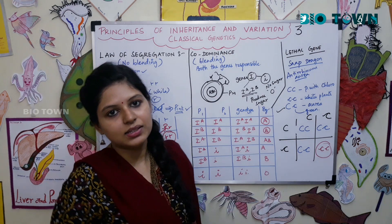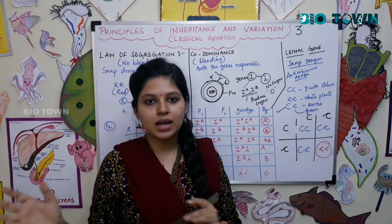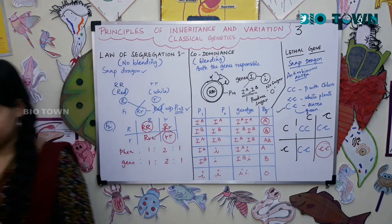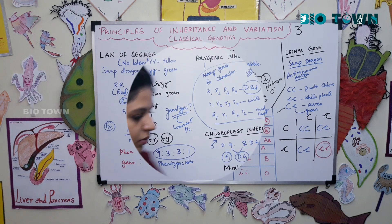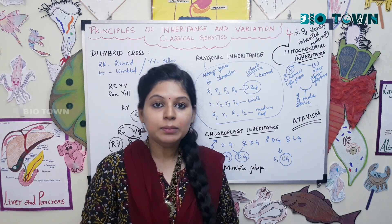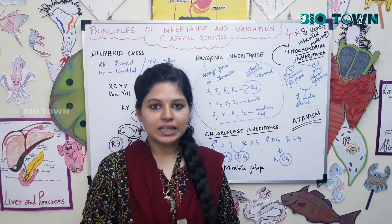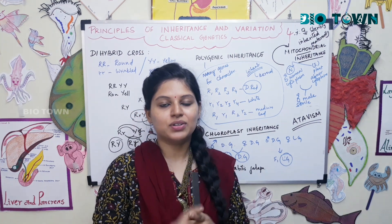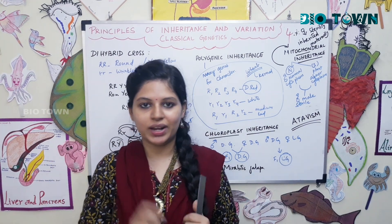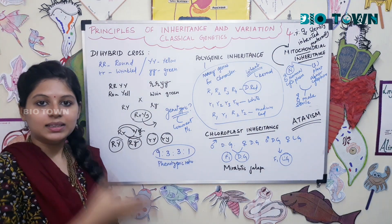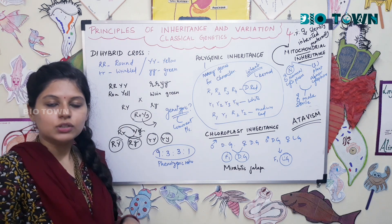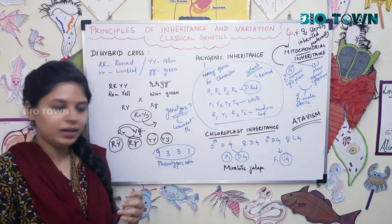So we have covered the law of segregation, co-dominance, and lethal genes. Next we move on to the last important session. Here we are toward the end of the chapter, but we will discuss many important parts. Our next topic is the dihybrid cross — a small twist where I will explain only half and you will answer the other half in the comments. A dihybrid cross involves two genes being inherited simultaneously.